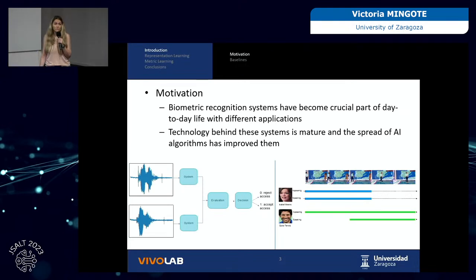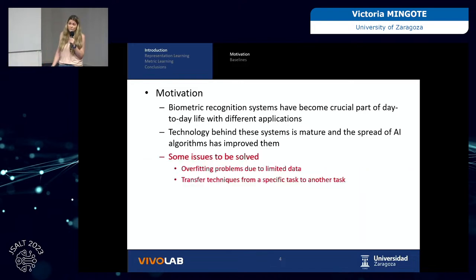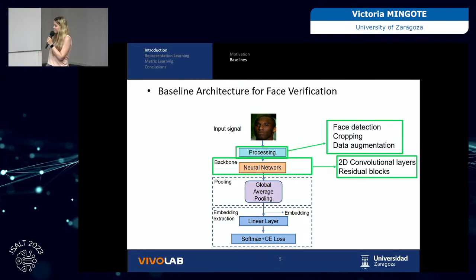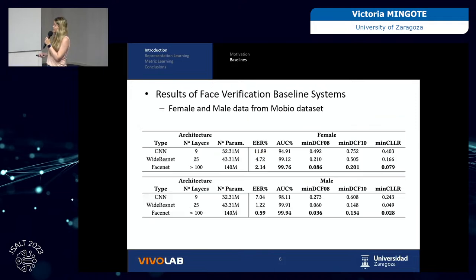Biometric recognition systems have become a crucial part of our daily lives, used for different applications. The expansion of these systems has promoted great development of the technology, especially with the spread of AI algorithms. However, there are still some issues when limited data is available and when transferring techniques from one task to another. This was the starting point of this work, developing face verification systems using DNNs, evaluated on a small mobile dataset.